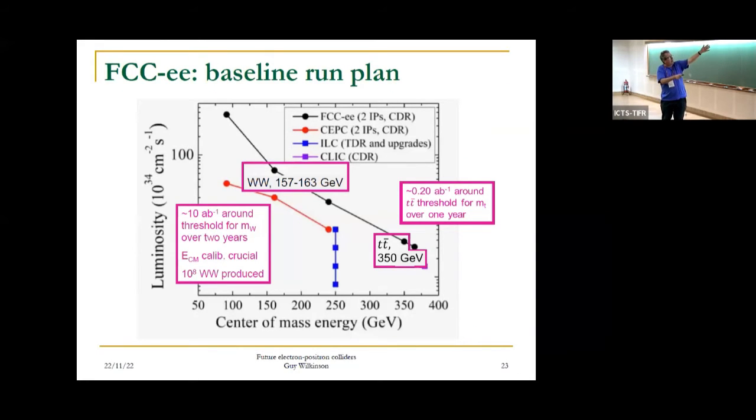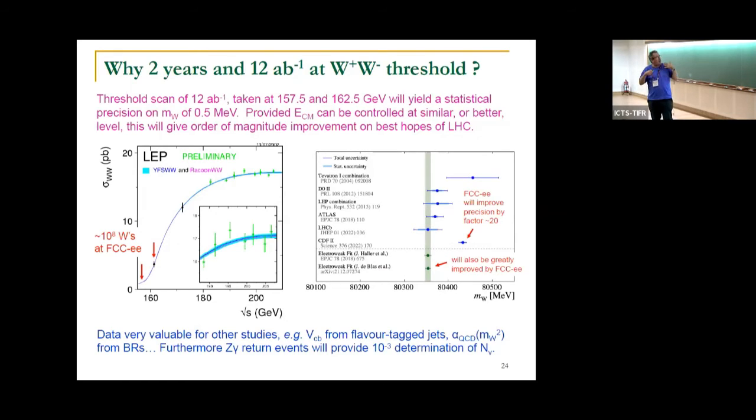But we need to move on. Let's talk about this energy, the WW threshold, and also the ttbar threshold. The idea here is to measure the mass of the W and the mass of the top. For the WW, the idea would be to take a threshold scan. This was done at LEP but with rather low statistics. With this and maybe with direct reconstruction, it will be possible to measure the W mass at this machine a factor 20 better than we know it today. This was always known to be important, but has been highlighted by this anomalous result from CDF.